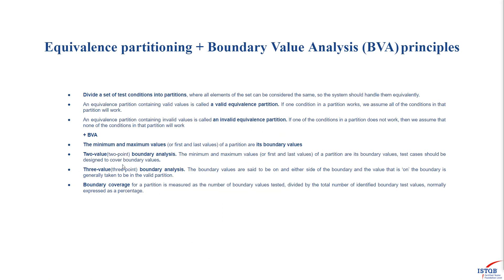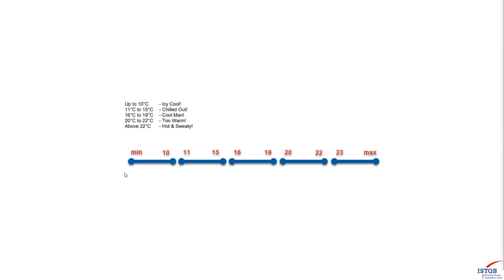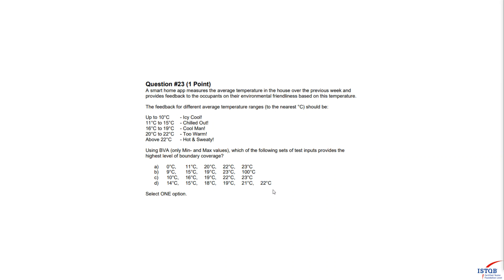With two-value boundary analysis, the minimum and maximum values — the first and last values of a partition — are the boundary values. This means the values we found when defining the partitions are our boundary values. We have five partitions but only eight boundary values, because we don't have enough information to determine some min and max values.